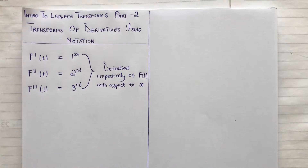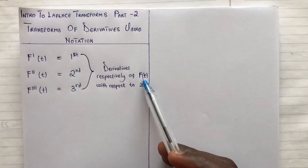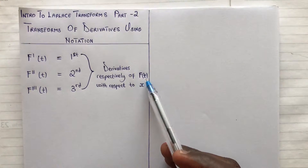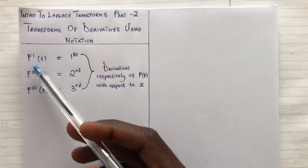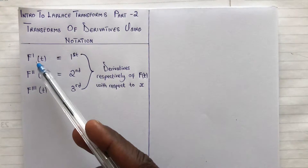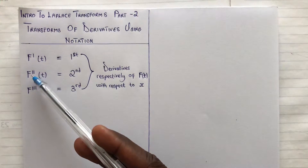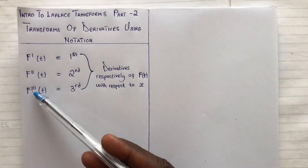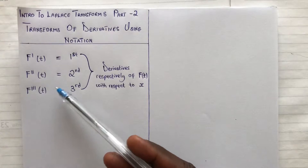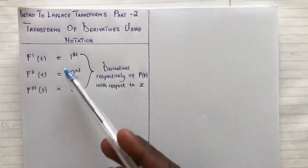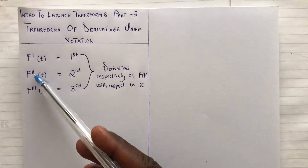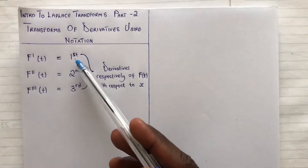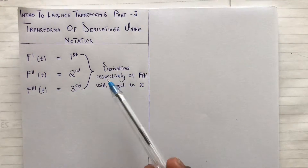We are going to cover the transform of derivatives using notations and we'll be quick. We have a function f(t). The first derivative of f(t) is f'(t), the second derivative is f''(t), and f'''(t) represents the third derivative. So f¹, f², f³ represent the first, second, and third derivatives respectively of f(t).